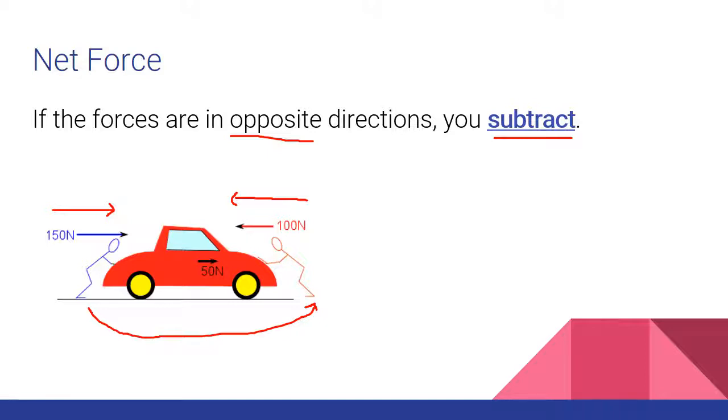These are in opposite directions so we'll subtract. 150 newtons minus 100 newtons is going to give us a net force of 50 newtons and it's going to be moving in the direction of our largest force so this will be moving to the right.